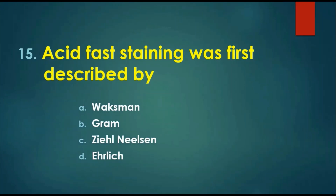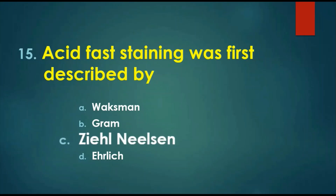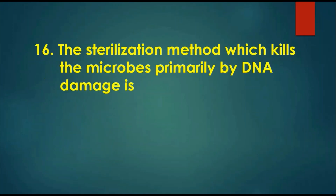Question 15: Acid-fast staining was first described by — options are: A) Waksman, B) Gram, C) Ziehl-Neelsen, D) Ehrlich. The answer is Ziehl-Neelsen. That's why acid-fast staining is also called the Ziehl-Neelsen staining, used to identify Mycobacterium species, which are acid-fast bacteria.